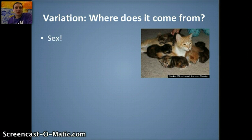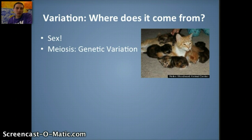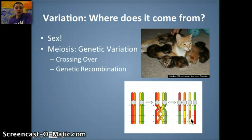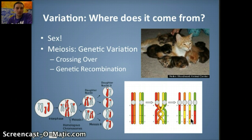Variation comes pretty much from sexual reproduction. Through sexual reproduction, different mechanisms really increase variation within a population. A lot of that is primarily coming from meiosis through crossing over, in which portions of homologous chromosomes can exchange location to mix up different alleles. Genetic recombination — the selection of different chromatids that end up going into the gametes — is very random. In humans, there are thousands of different combinations because we have 23 chromosome pairs, resulting in a huge variety of possibilities and increasing genetic diversity.